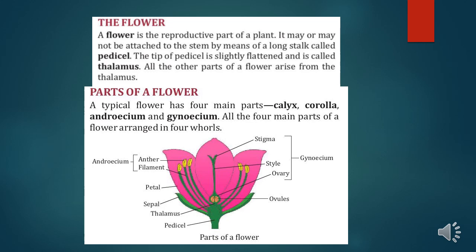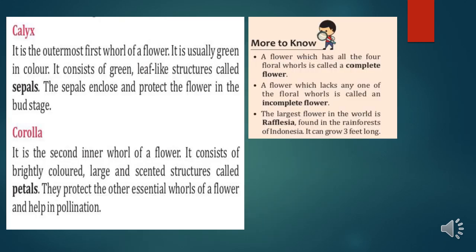A flower has four main parts: Calyx, Corolla, Androecium, and Gynoecium. All four main parts of a flower are arranged in four whorls. We will study each of them in detail.